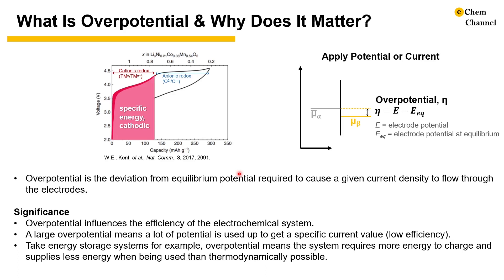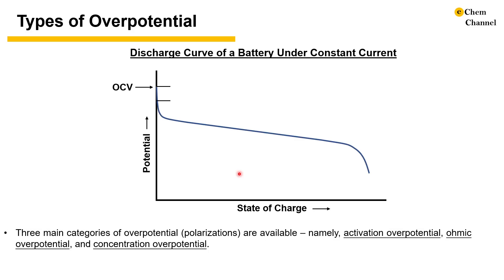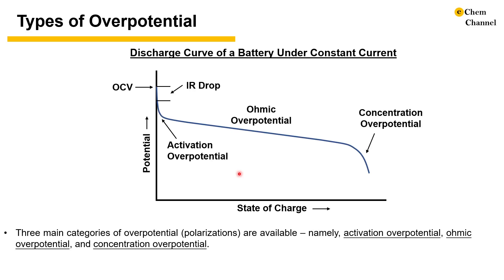Above 4.5V, the ionic redox of oxygen enables significant extra charge storage, but due to the large overpotential, the energy efficiency decreases at the same time. There are three main categories of overpotential: namely activation overpotential, ohmic overpotential, and concentration overpotential.